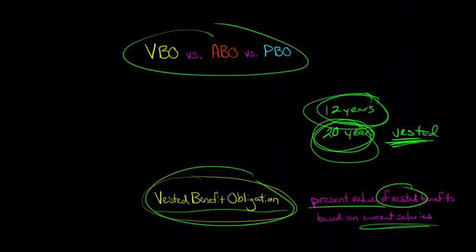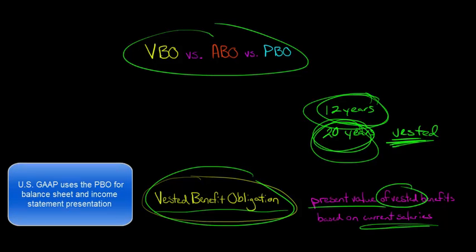So the PBO is actually going to be the largest of these three obligations. And the PBO is actually the one you're going to net with the fair market value of the plan assets in order to determine whether the pension is underfunded or overfunded.